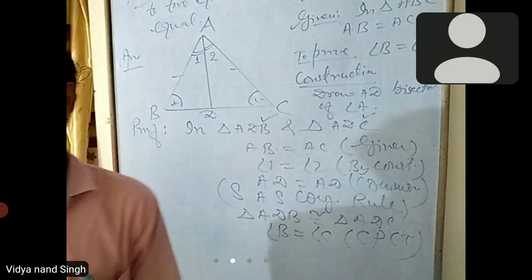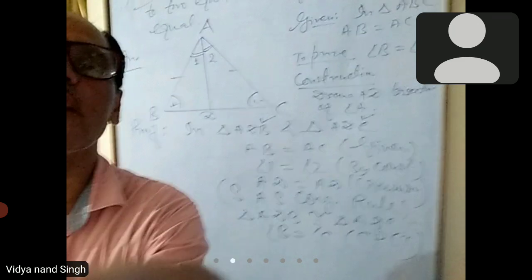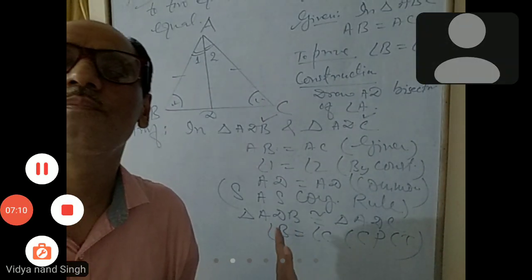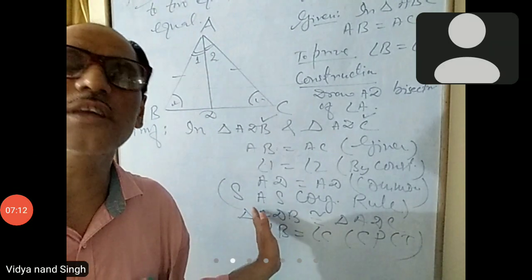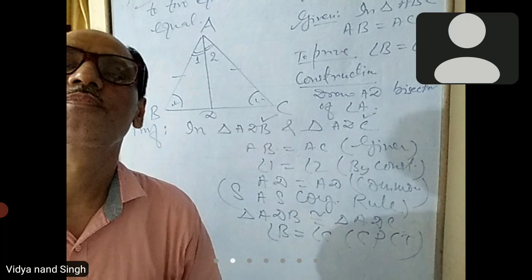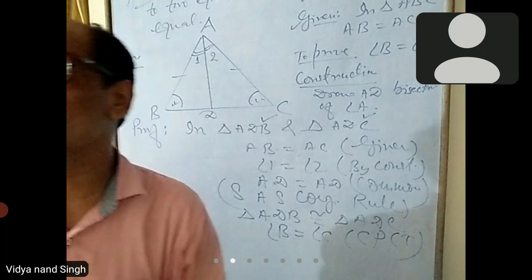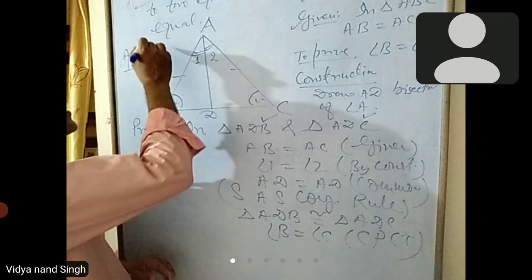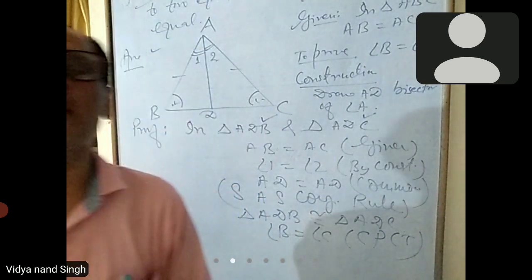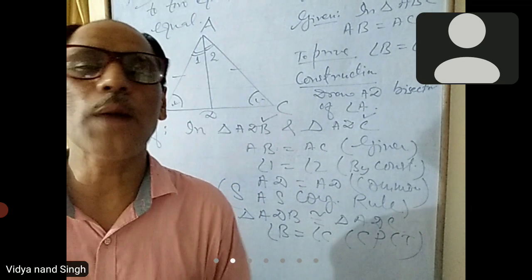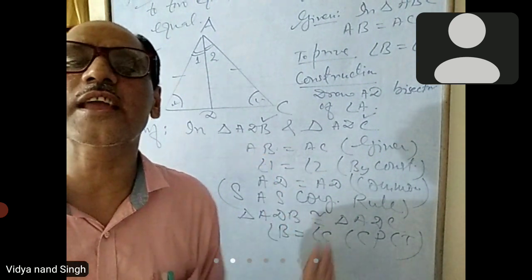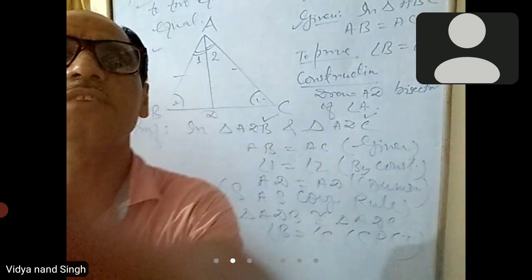Here CPCT means corresponding parts of congruent triangles. So this question is clear — we proved that the angles opposite to two equal sides of a triangle are equal, by showing congruence and concluding angle B is equal to angle C by CPCT.